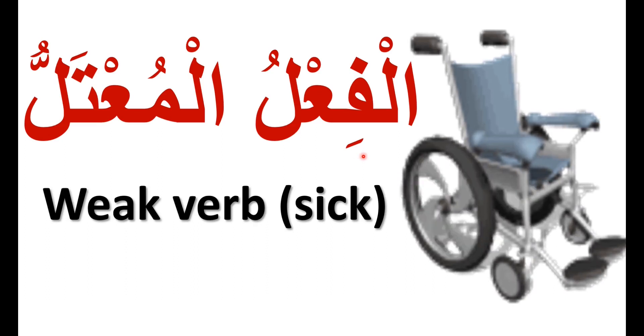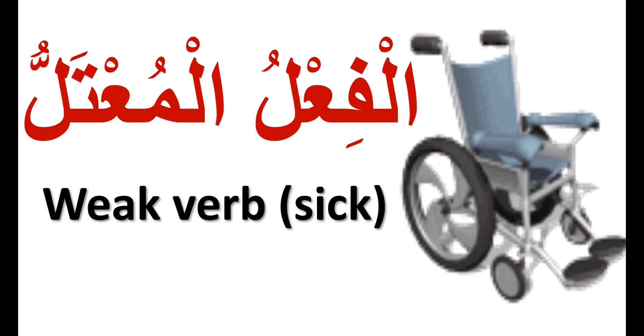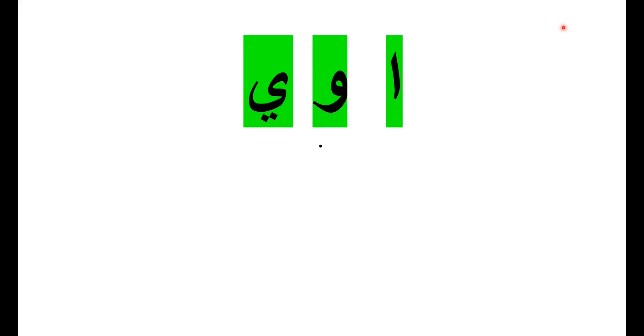Today we are going to study the verb معتل, the weak verb or sick verb. الفعل المعتل, weak verb. What makes an Arabic verb become weak or sick? A weak verb, الفعل المعتل, is a verb that has one or two weak letters in its root. The weak letters are Alif, Waaw, and Ya.